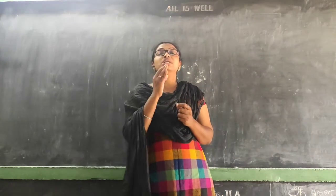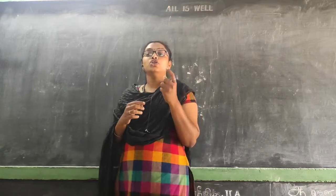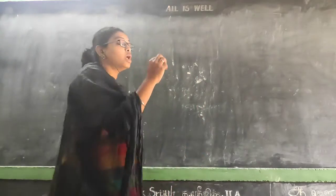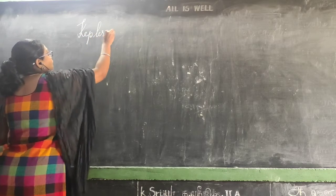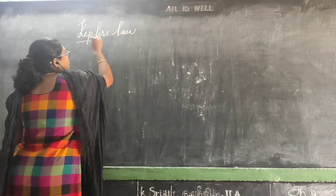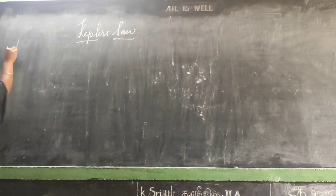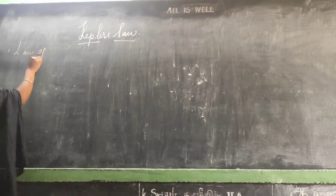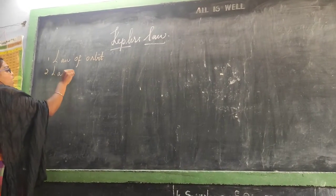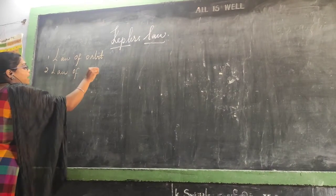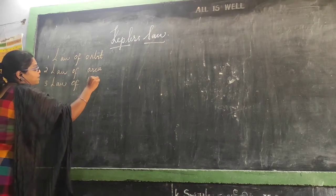Kepler proved that with three laws. We have three Kepler's laws. First let me write the topic on the board. The topic we are going to start is Kepler's laws. There are three laws: the first law is the law of orbit, the second law is the law of area, and the third law is the law of period.